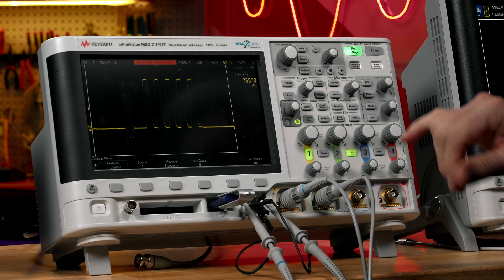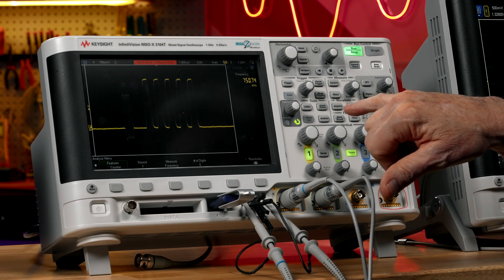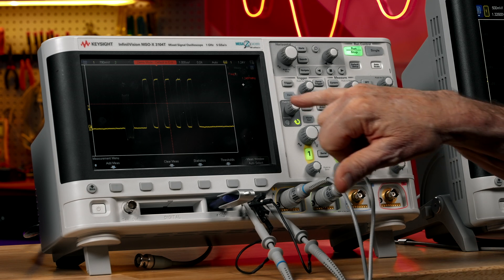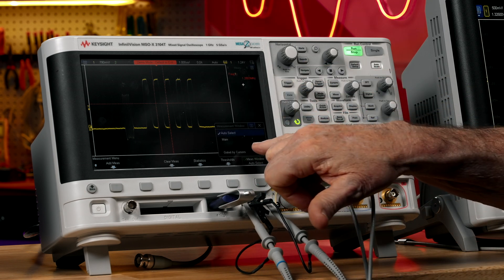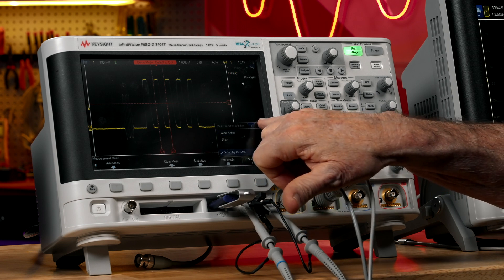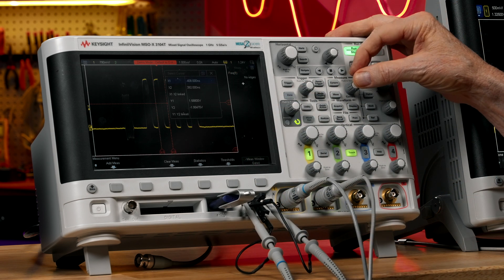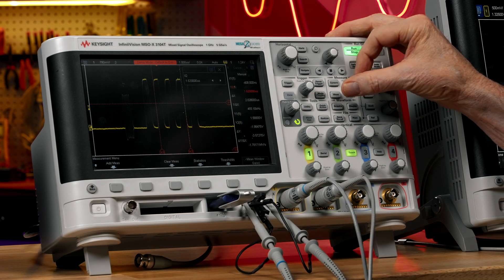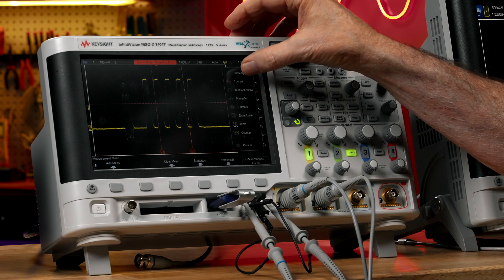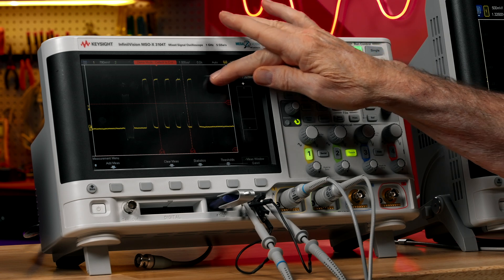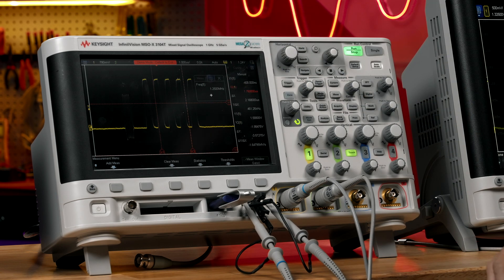Now let's do it the correct way. I'm going to go into my measurement menu, and I've got frequency turned on, and I'm going to select gated by cursors. And so now it's going to perform, and let's move this over here so we can see it more clearly.